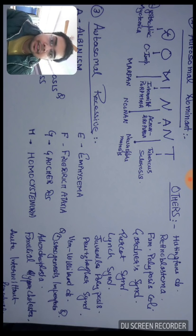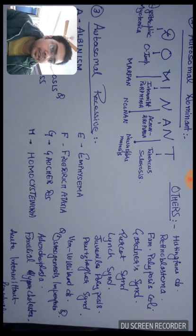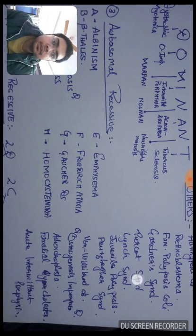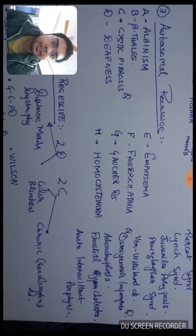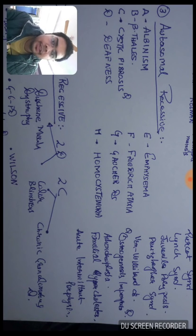Important autosomal dominant diseases include achondroplasia, familial hypercholesterolemia, and acute intermittent porphyria.